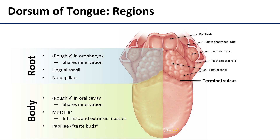The root of the tongue sits roughly in the oropharynx, and because of this it's going to follow the pattern of sensory innervation for the oropharynx. It doesn't have any sensory papillae — no taste buds or touch papillae — but it does have a very rugose appearance. That comes from the lingual tonsil, which is a mass of lymphatic nodules that cover its dorsal surface. This is part of a larger lymphatic ring in the pharynx that we'll talk about more in future sessions.